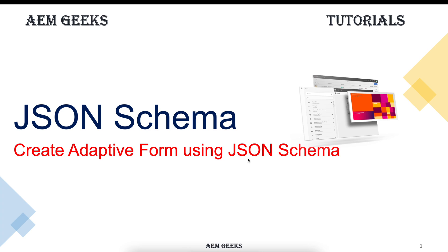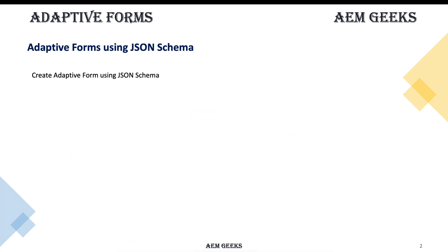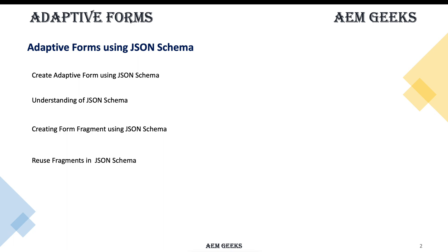In this tutorial, I'll talk about how to create an adaptive form using schema. You can define a schema for your adaptive form in a JSON file and use that file as a source. We'll see how to create an adaptive form using JSON schema, understand how to structure and write the schema, see what the main parts of that schema are, and how to create form fragments using schema. There's an option to create either an adaptive form or form fragment using schema, and we'll see how to reuse those form fragments or fields multiple times in a form.